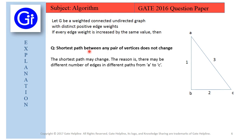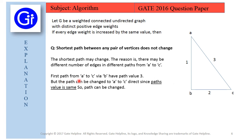Now we will see the explanation. The shortest path may change, and the reasoning behind this is there may be different number of edges in different paths from A to C, which we already seen here that there are two paths. So first path from A to C via B has path value 3. Here it's A to B and B to C, and it's having path value as 3, as 1 plus 2 equals 3.